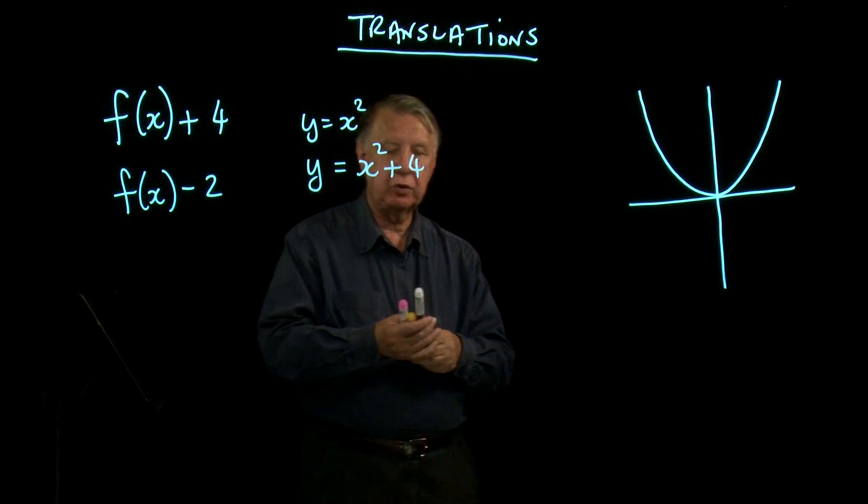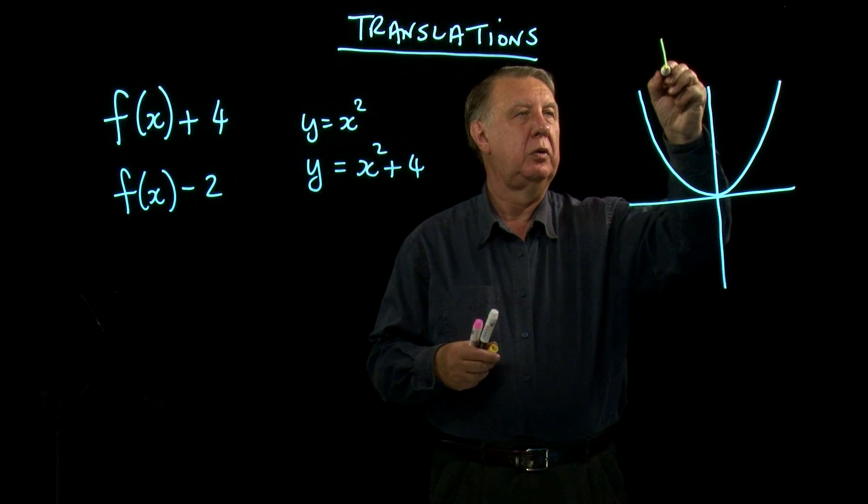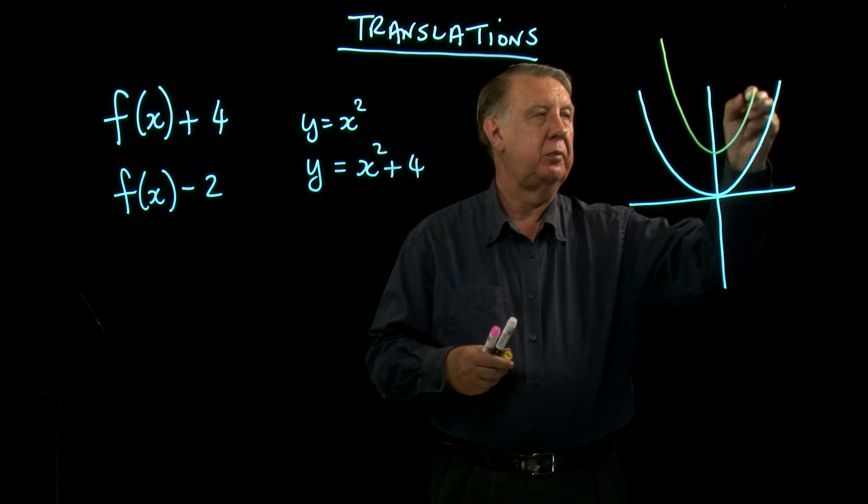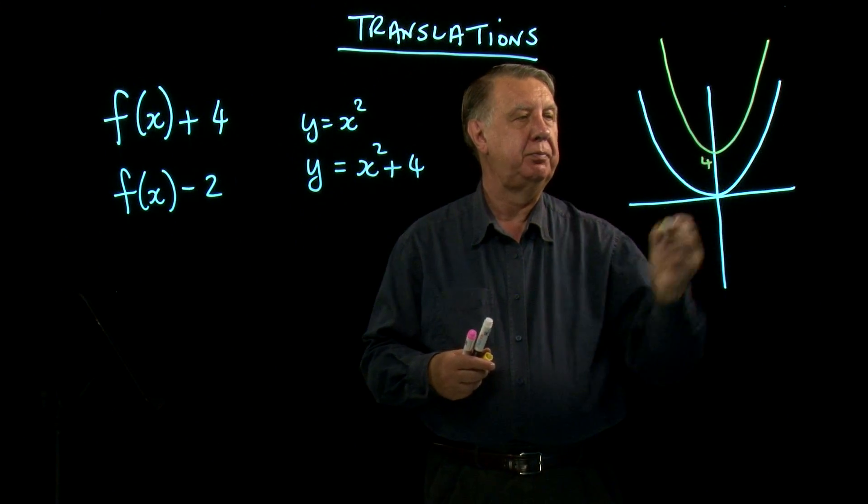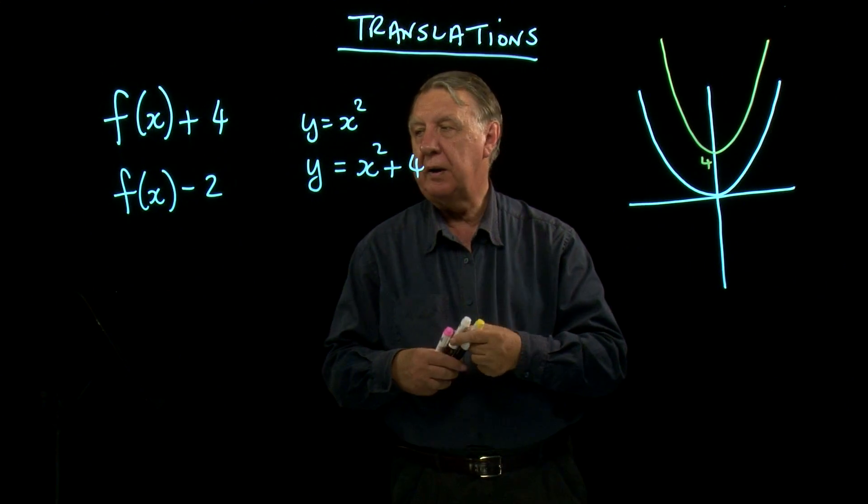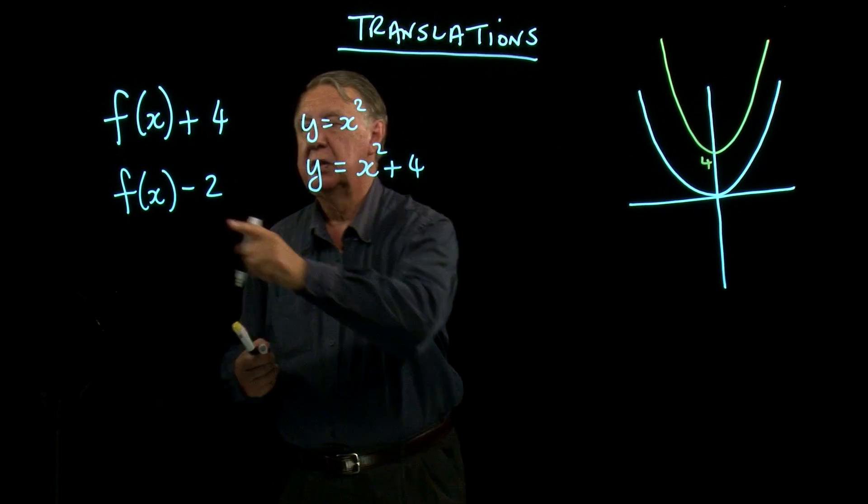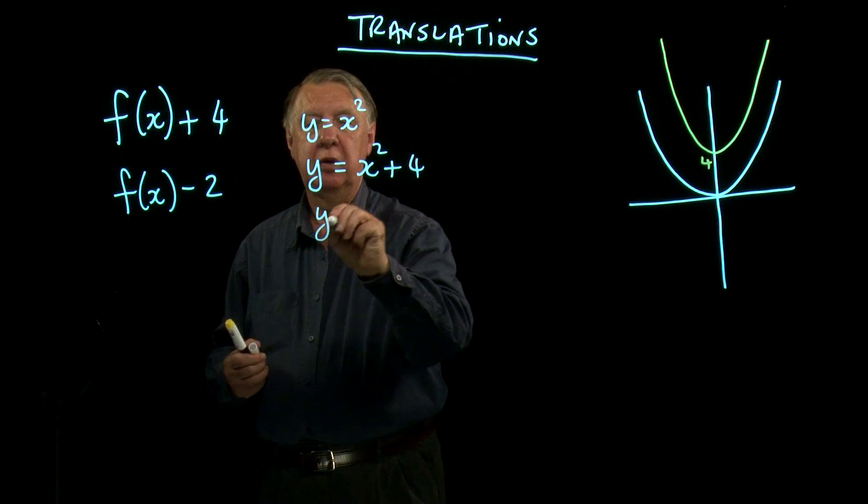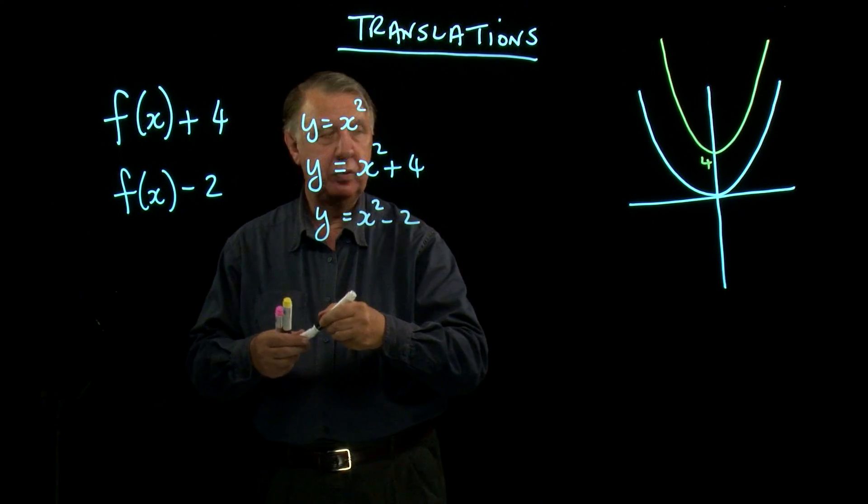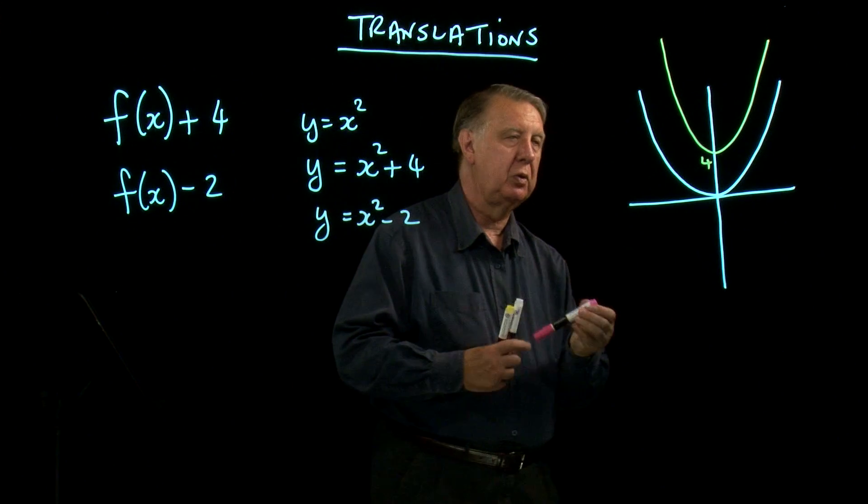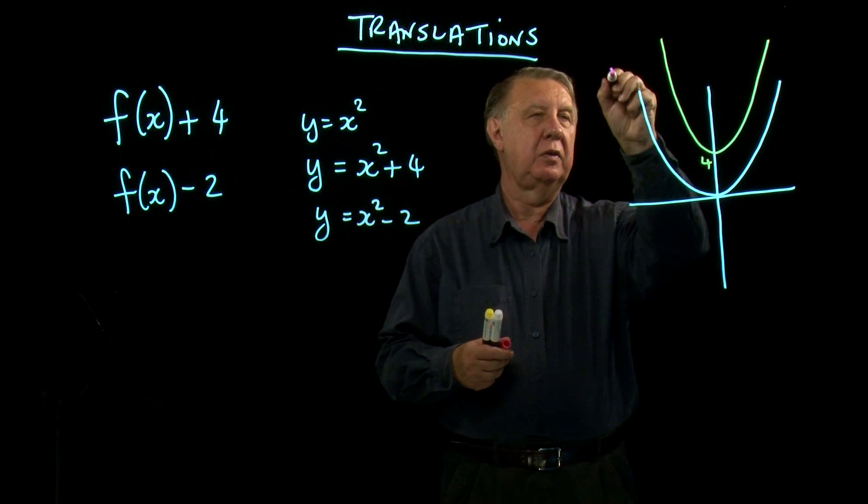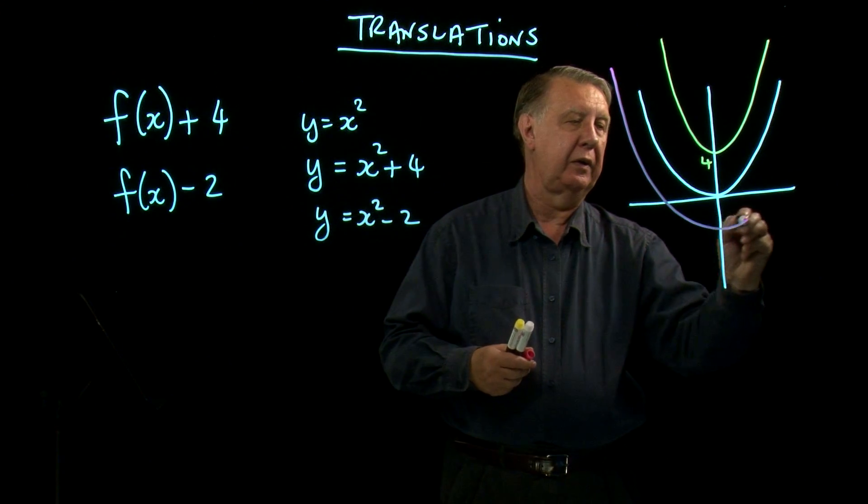And if I draw that graph, it will look like that. And similarly, if we look at this one here, y would be x squared minus 2. And if I draw that, it looks like this.